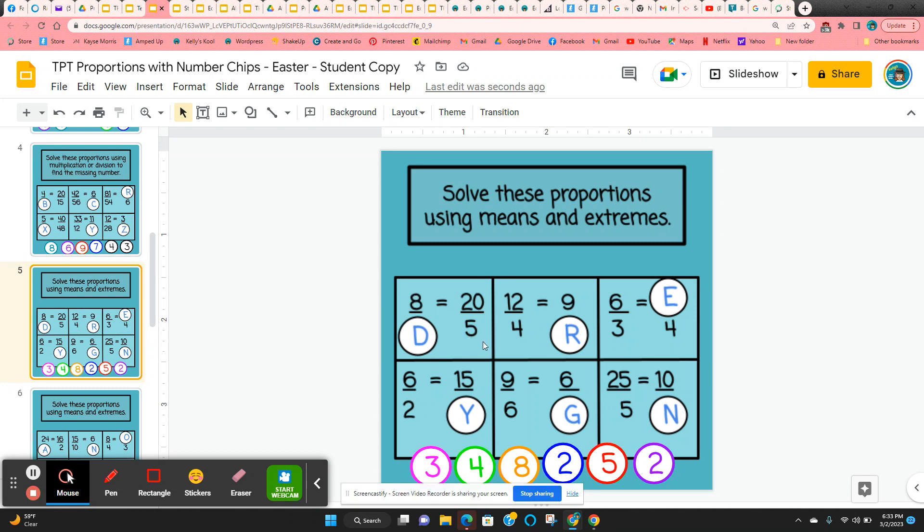Eight times five is 40. So 20 times what number would also be 40. So again, click and hold. Move it into place. And they'll be using every single number chip.